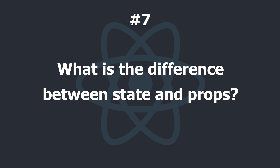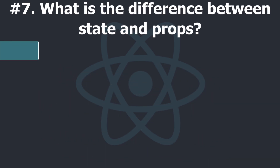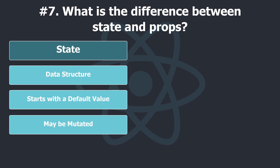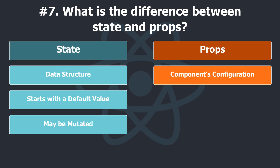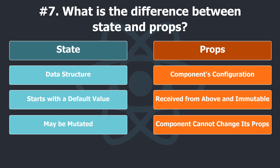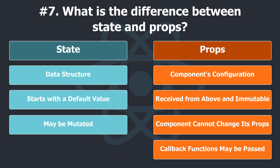What is the difference between state and props? The state is a data structure that starts with a default value when a component mounts. It may be mutated across time, mostly as a result of user events. Props are a component's configuration. They are received from above and immutable as far as the component receiving them is concerned. A component cannot change its props, but it is responsible for putting together the props of its child components. Props do not have to just be data — callback functions may be passed in as props.